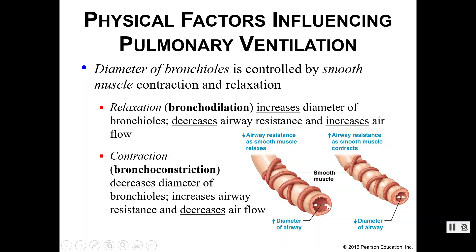During contraction, the diameter of the bronchioles constricts — bronchoconstriction — which increases airway resistance and decreases airflow. Narrowing the diameter makes it harder for air to flow through and reduces the amount of air that can pass.